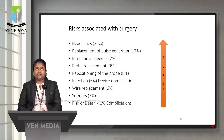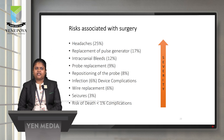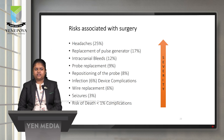Risks associated with DBS surgery: commonly, about 25% of patients will have continuous headaches. Replacement of the pulse generator carries later risk factors including intracranial bleeds, probe replacement, probe repositioning, device-related infections, wire replacement, seizures, and a very small risk of death, which is less common compared to headache-related complications.